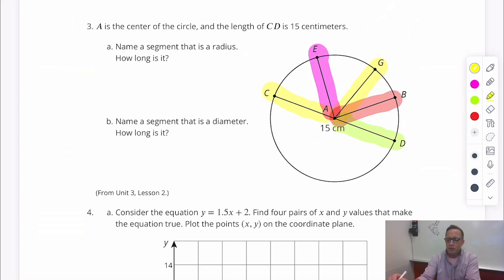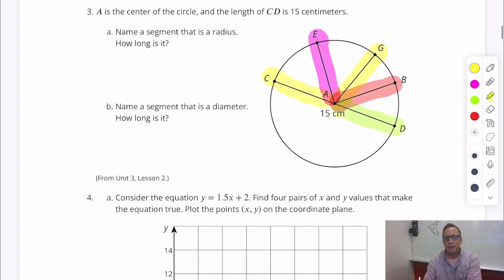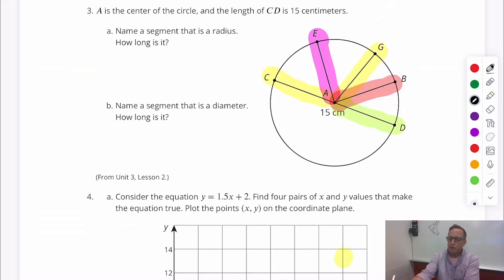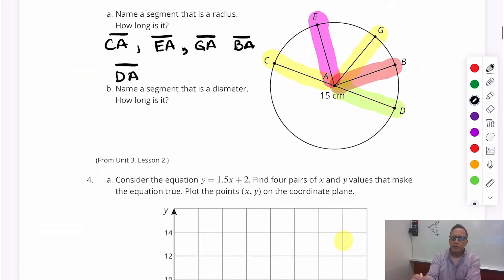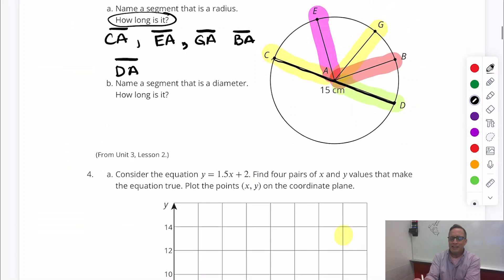And let me just, while I'm at it, just finish this up. There's another radius. I ran out of colors there to use. But just name a segment that's radius. Whatever. And let me just go ahead and just write them all down. What the hay. Let's do that. So if you wrote CA, good on you. If you wrote EA, you're in the game. If you wrote GA, good. We've got BA. And those, we can totally switch around those letters. We can make it AC, AE, AG, AB. It's all good. And then we've got DA. So those are all radii right there.